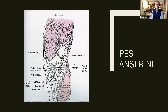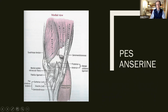Looking from the medial aspect, here again is the vastus medialis, sartorius, gracilis, and semitendinosus, all on their way to the pes anserine, which is in this area — looking at medial knee issues.